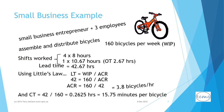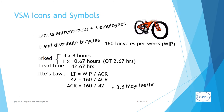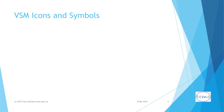The business owner would like to use lean and value stream mapping to reduce overtime costs and staffing issues. They have considered and decided against employing more staff until trying a lean solution.